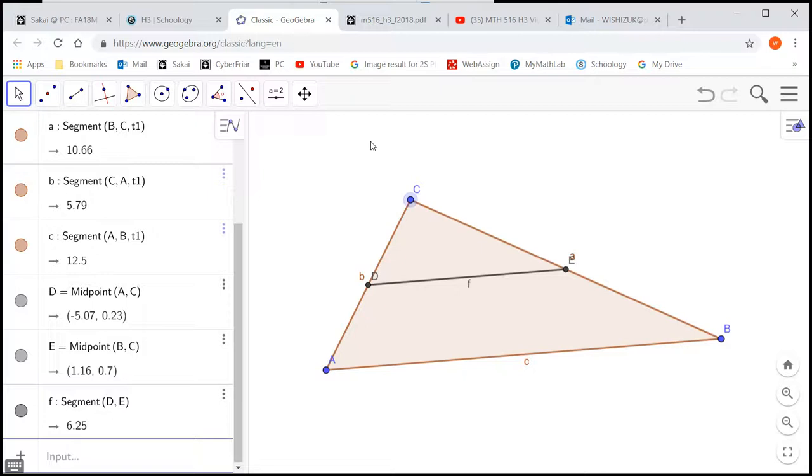Then what we want to do is show that these two line segments, the third side and the midpoint connector, are parallel.